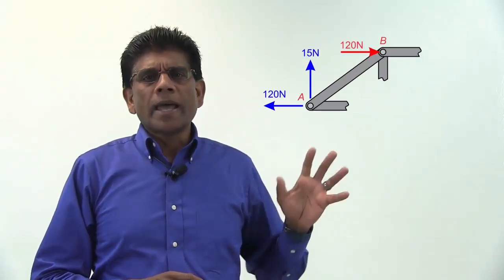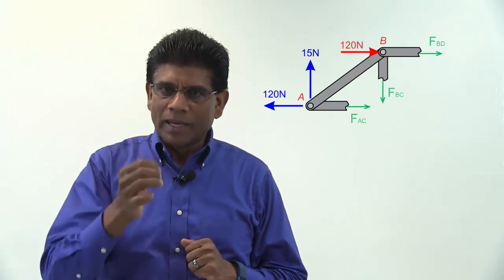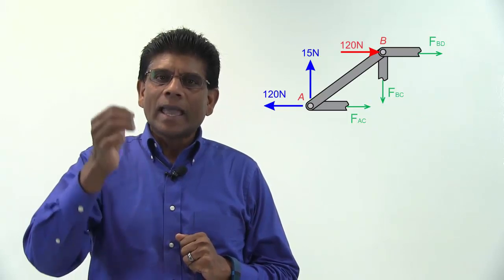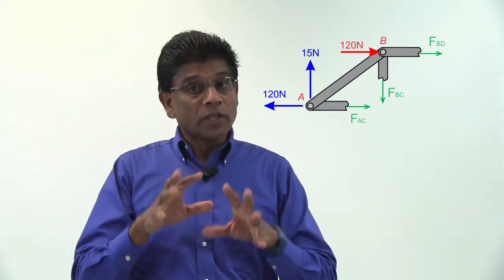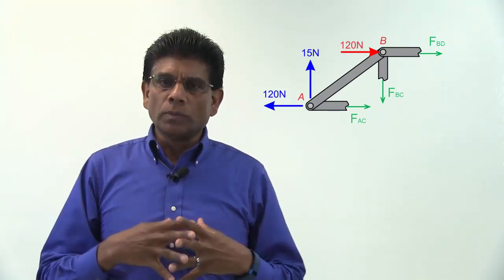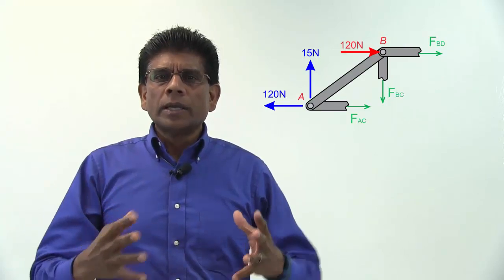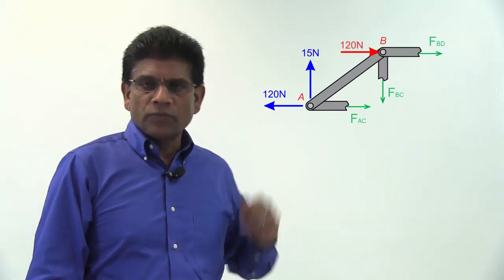Take a look at the free body diagram of this section. There are three unknown forces, member forces BD, BC and AC. Although I can figure out the directions of these forces, I don't want to waste my time doing that. I am going to assume that all members in this structure are in tension as shown in this free body diagram.